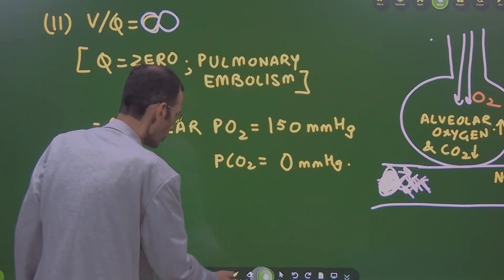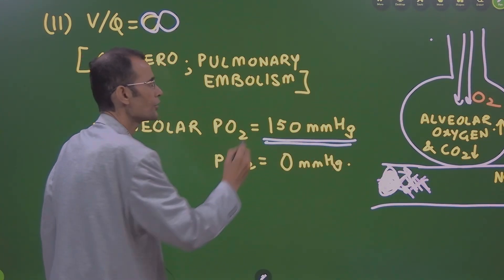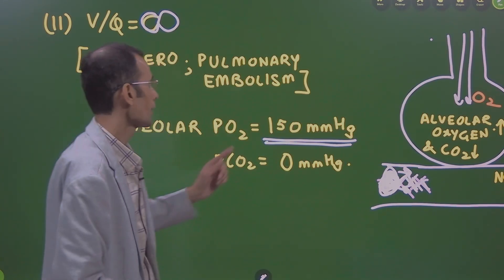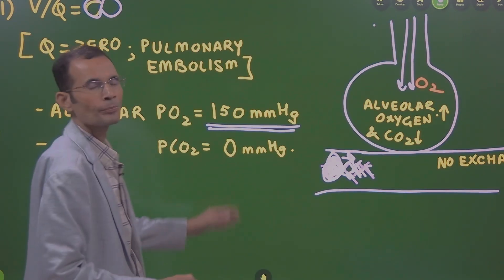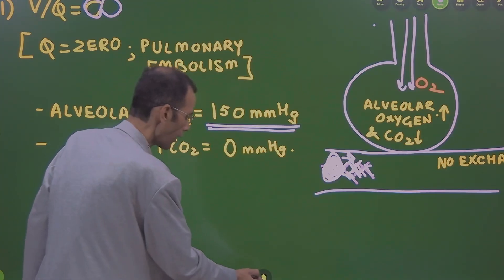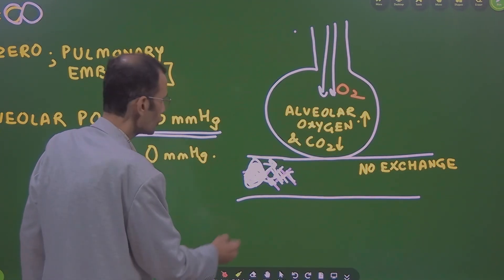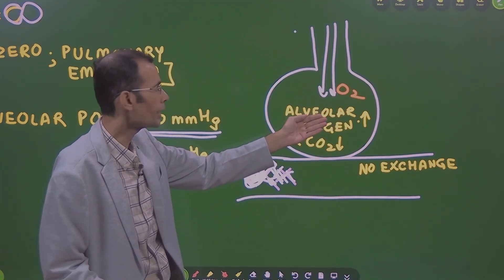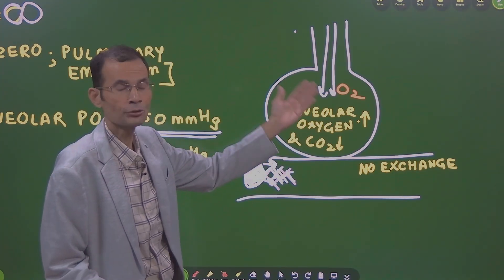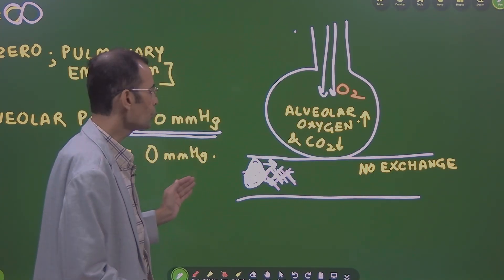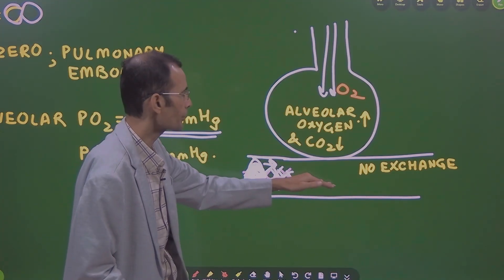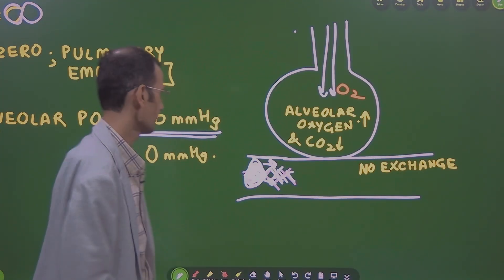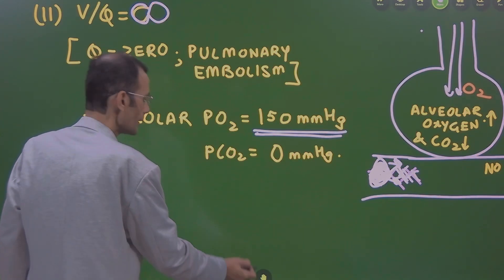PO2 rises to almost 150 mmHg — it is not diffusing from alveolus into the blood. On the other hand, PCO2 in the alveolar air will be 0. Carbon dioxide is brought by the blood and diffuses into the alveolus, but if there is no blood flow, no carbon dioxide comes — PCO2 will be 0 in the alveolar air.